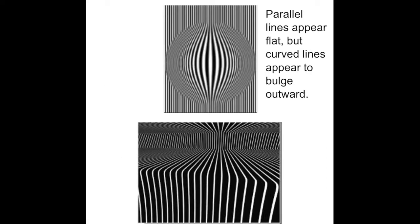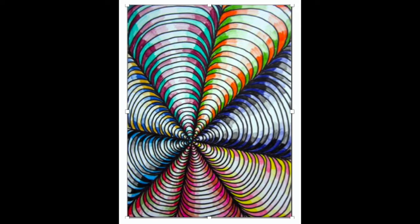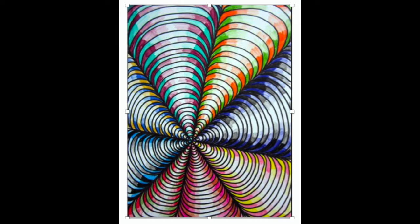Parallel lines seem to appear flat but curved lines appear to bulge outward. In our drawing lesson this week we're going to try to create an optical illusion that looks like the forms are bulging out at us and curving away from us.